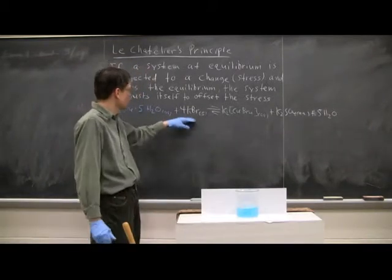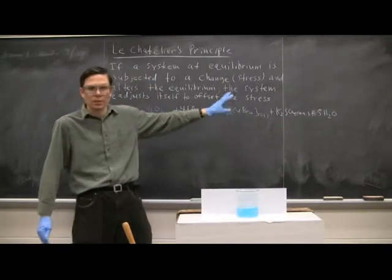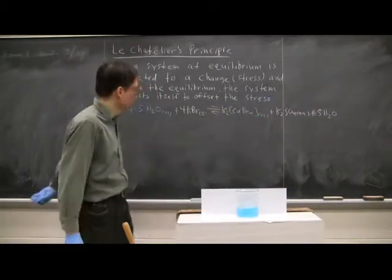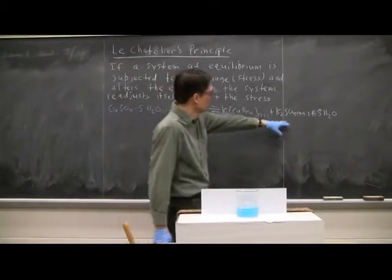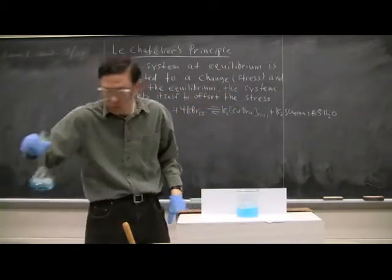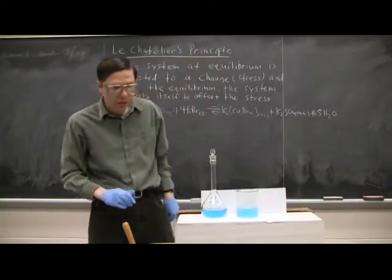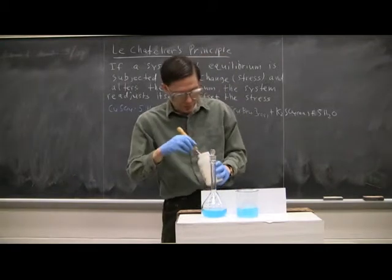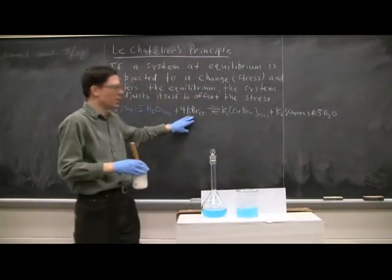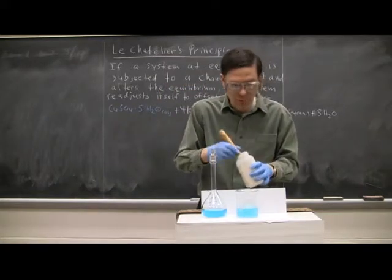And then we're going to add some KBr. And what we'll end up getting is a green complex, a potassium-copper complex, and then there's two other products: potassium sulfate and water. Now I'm going to leave this up here just as a comparison so you can see how it changes. So I'm going to add some potassium bromide here and I'll stir it and see how the equilibrium changes.